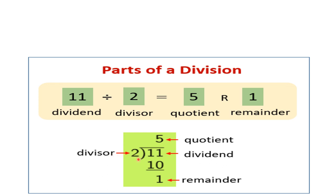So how do we divide? We ask the question: how many 2s fit in 11? 2×1=2, 2×2=4, 2×3=6, 2×4=8, 2×5=10, and 2×6=12. Since 12 is greater than 11, definitely not 6 twos. There will be 5 twos, meaning 2×5=10. So we ask this question every time: how many 2s do we need to make 11?